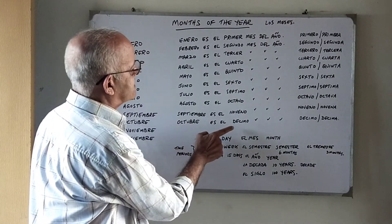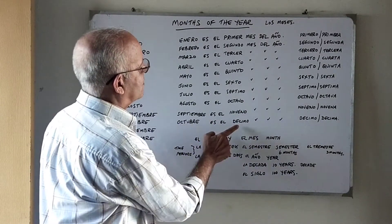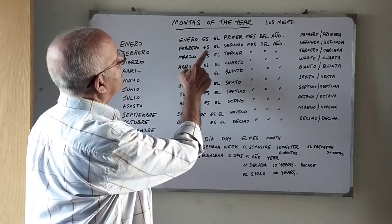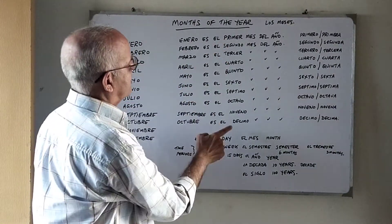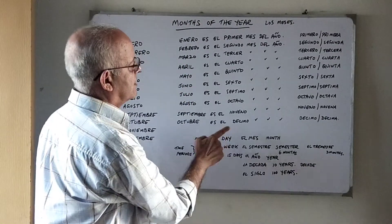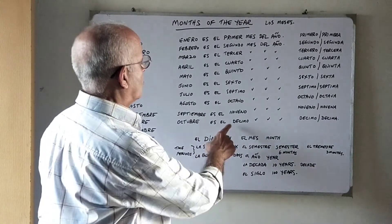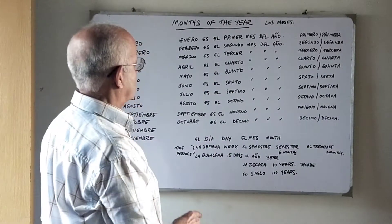Octubre es el décimo mes del año — décimo means tenth. From the first to the tenth, if you learn it's enough. You don't have to go to eleventh and twelfth. These are enough for basic conversation.